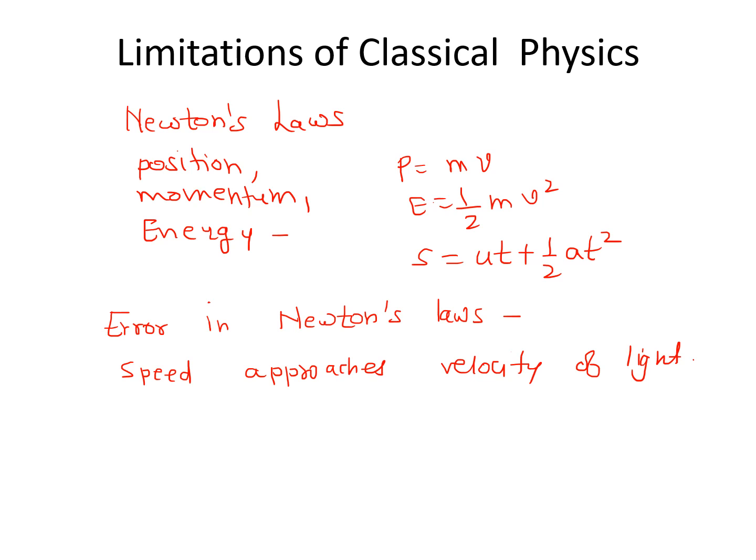So what did Einstein say? What was the cause of these errors in Newton's laws? Einstein said that this error is there because Newtonian or classical physics is based on the assumption that an absolute frame of reference exists in the universe, and that every physical quantity — position, momentum, energy — can be measured absolutely.